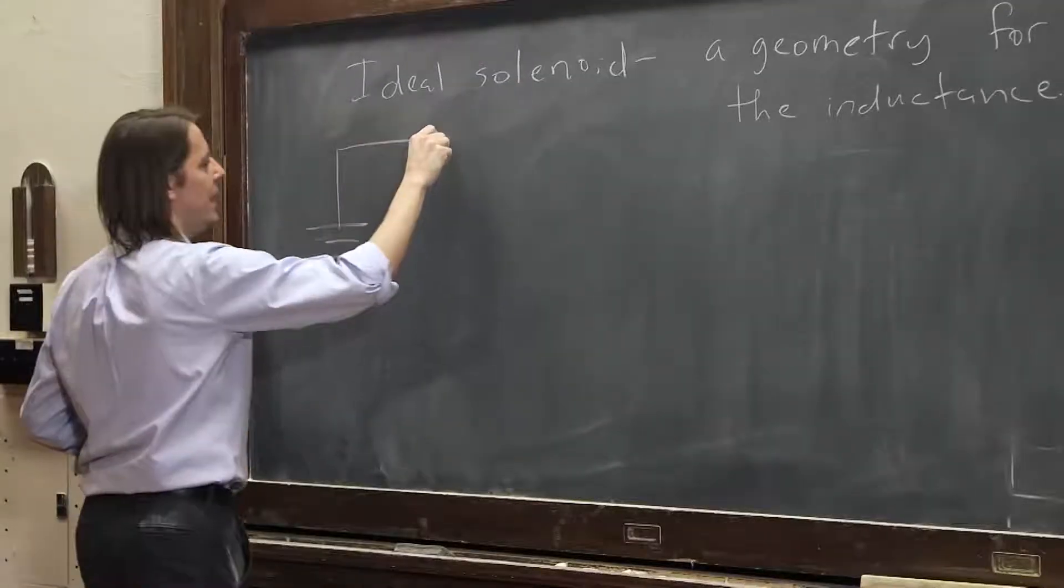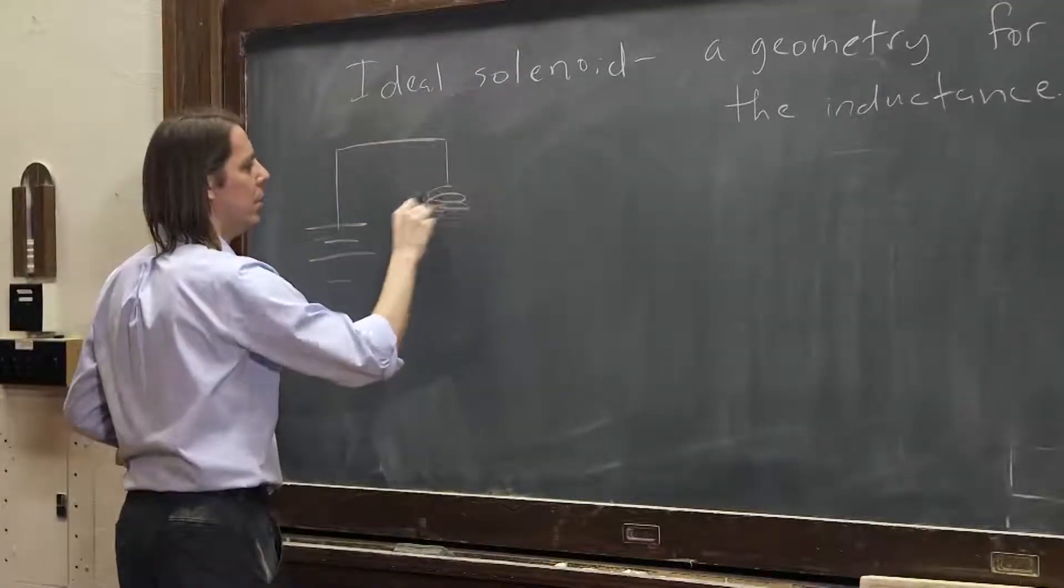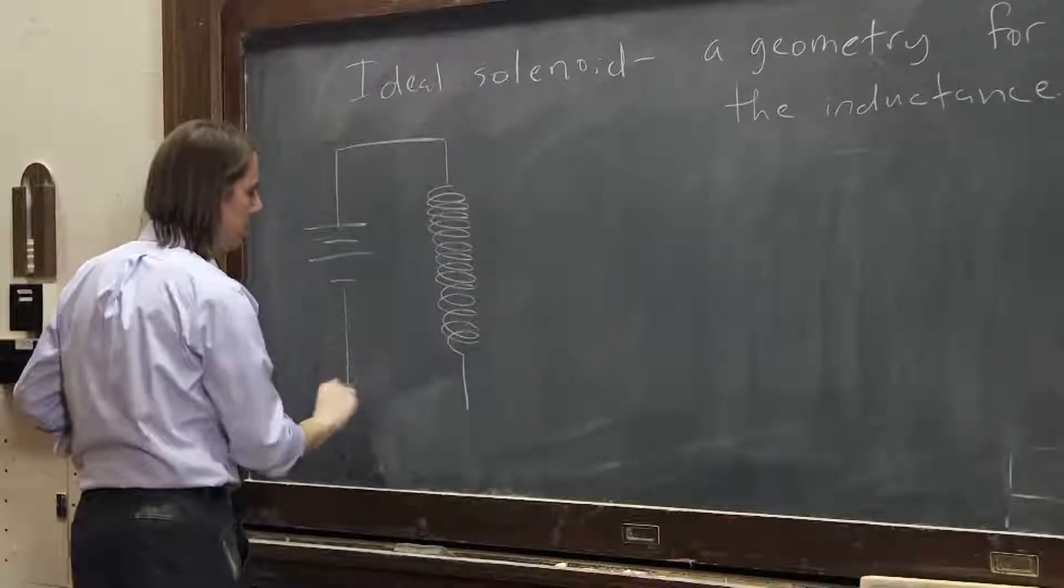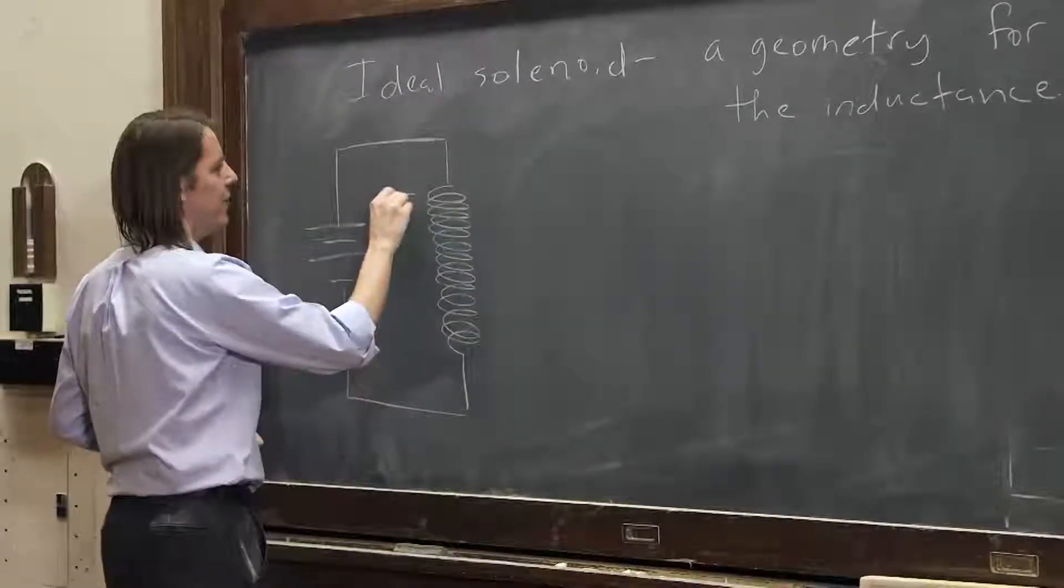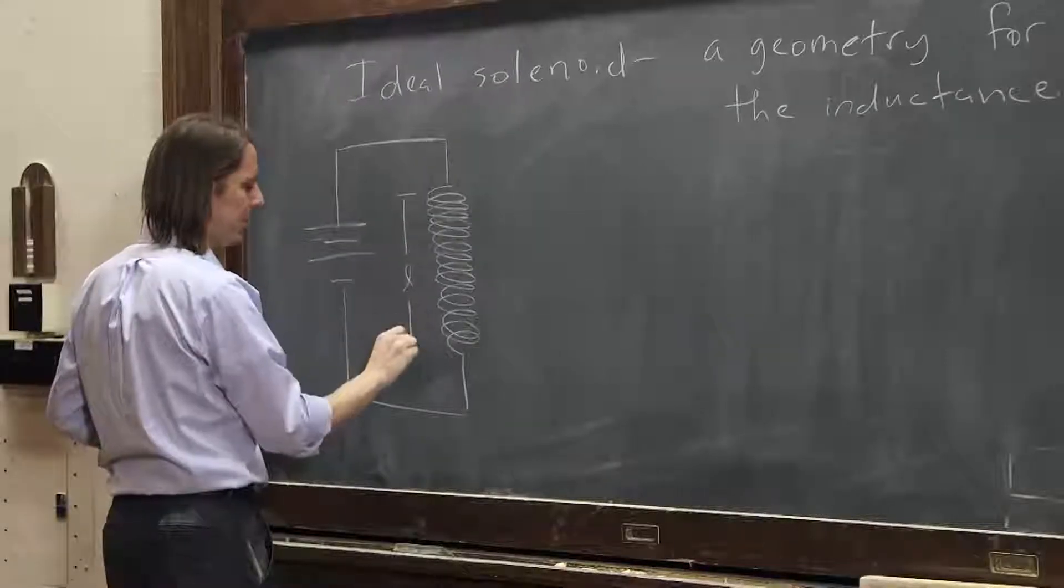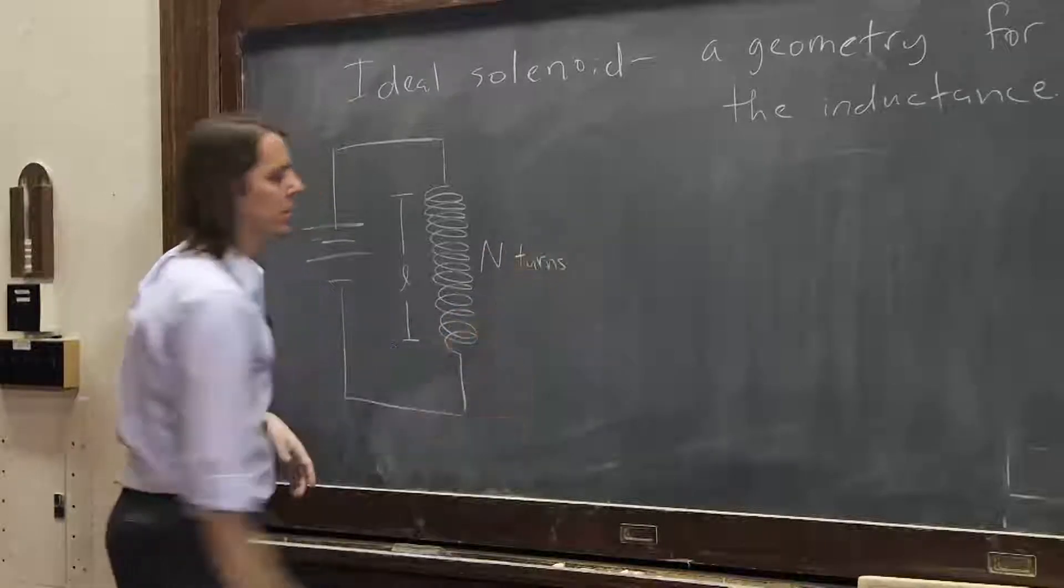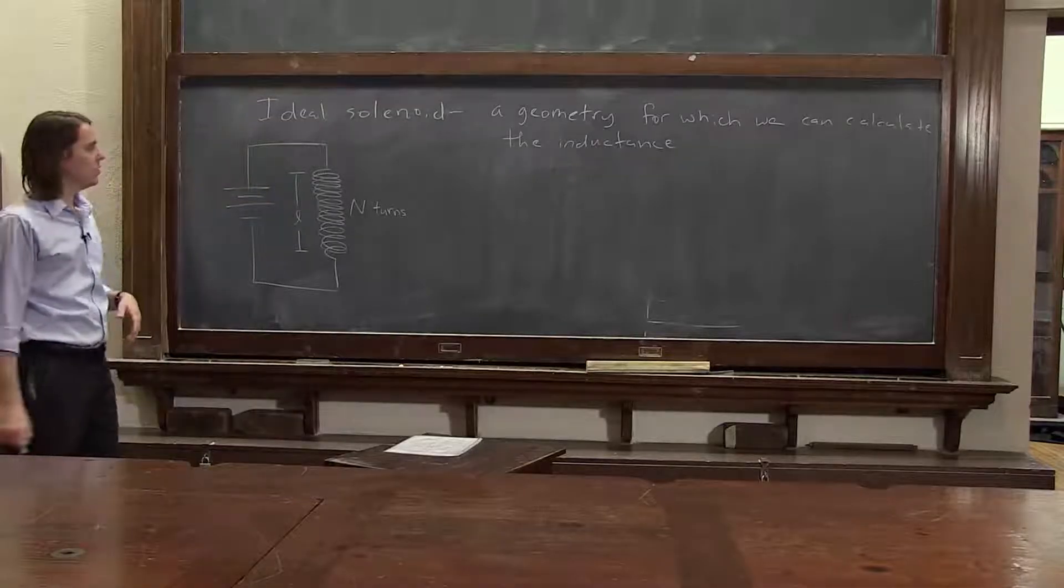So we have our circuit here, and this inductor is an ideal solenoid of length L, a little L. This big L is now taken. And with n turns. Not turns per unit length, n turns.